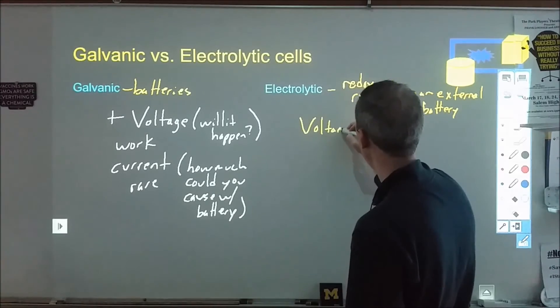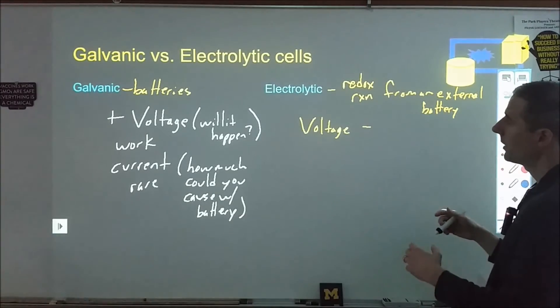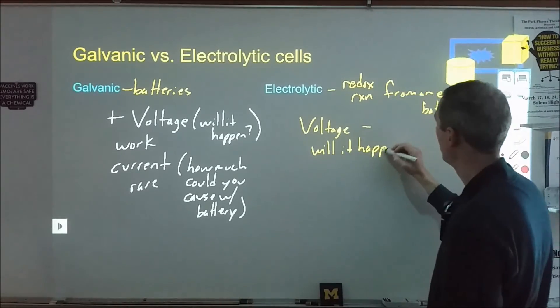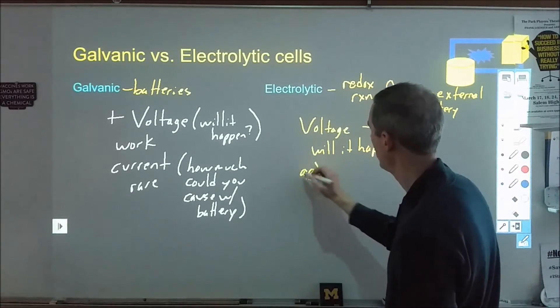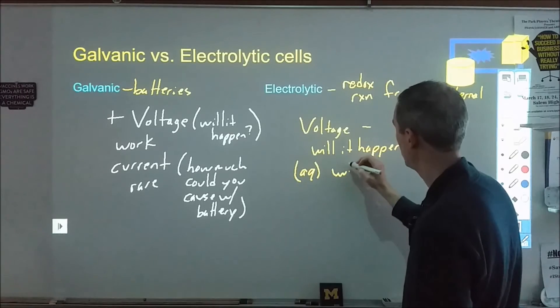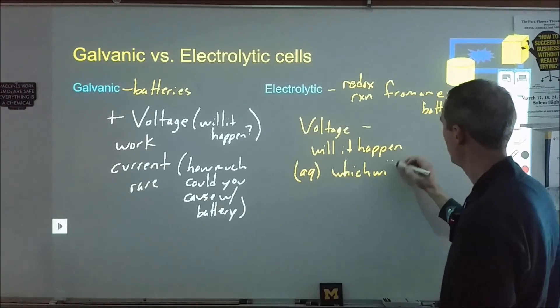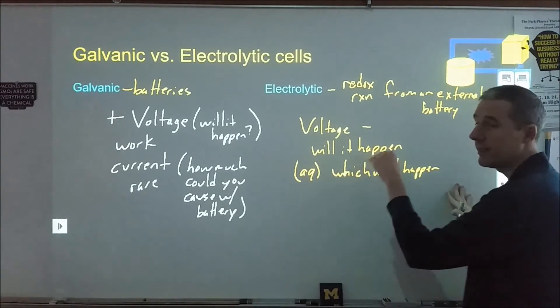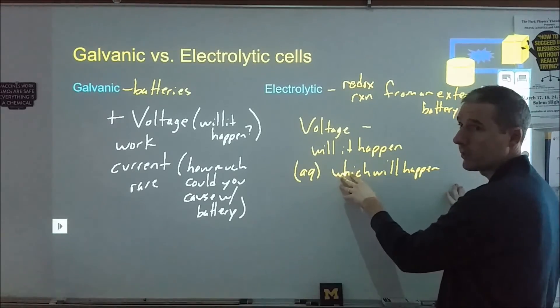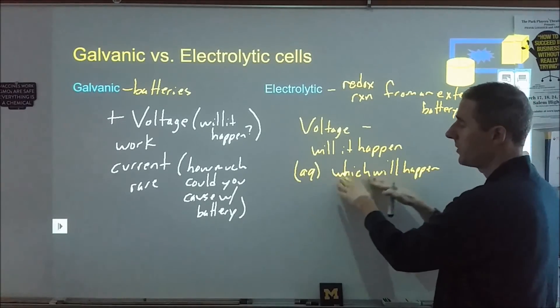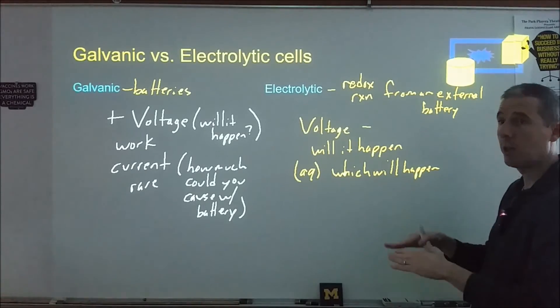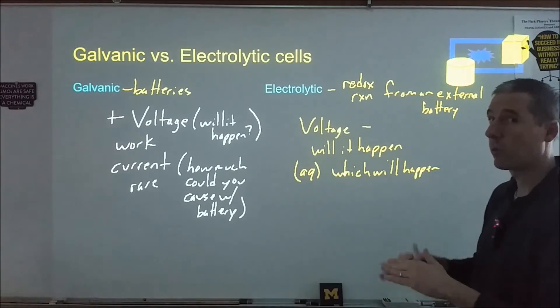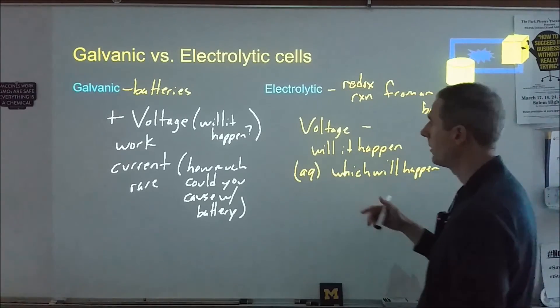Now if we're coming over to electrolytic, here we're looking at a voltage that's usually negative. When we're looking at a voltage that's negative, we're looking at will it happen. And in the case of aqueous solutions, we're looking at which will happen. Usually here in aqueous solutions, we're looking at two different ions and comparing them to water. Are these easier to reduce or are these easier to oxidize than water is? If not, then the water is going to react. If so, then the ions are going to react. And if they're really close, sometimes it can depend on concentration. Chloride turning into chlorine gas is highly concentration sensitive because it's right around the same voltage, negative voltage, as what water is.